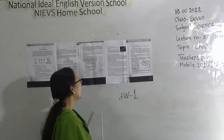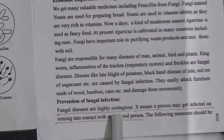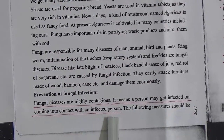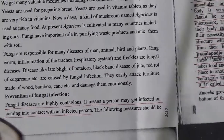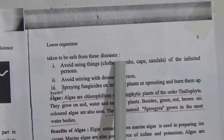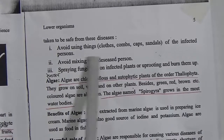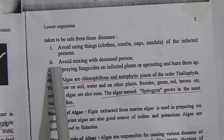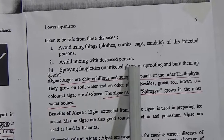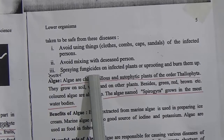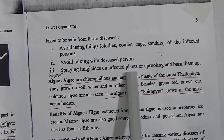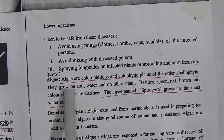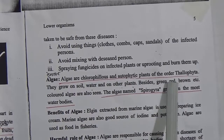Prevention of fungal infection: fungal diseases are highly contagious — a person may get infected by coming into contact with an infected person. Measures to stay safe: number one, avoid using things like clothes, combs, caps, and sandals of infected persons; number two, avoid mixing with a diseased person; number three, spray fungicides on infected plants or uproot and burn them.